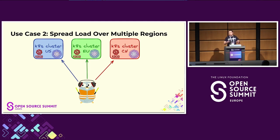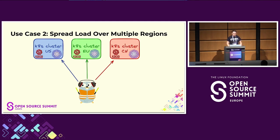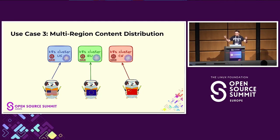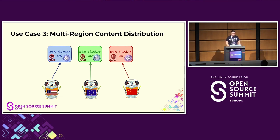The second use case is spreading load across multiple geo-regions. With the same US, EU, and China setup, KGB can steer traffic in a round-robin manner roughly equally across those three locations. There is also a weighted version where you can assign percentages. The third use case is multi-region content distribution — the main focus of this talk — where clients are steered to the closest cluster: US users go to the US cluster, European to Europe, and Chinese to China, making routing as effective as possible by geolocation.